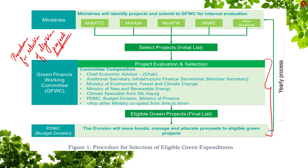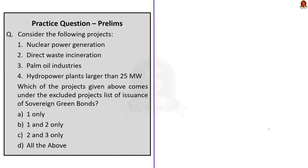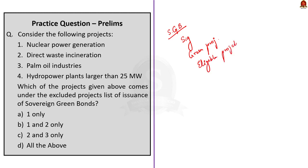In this article discussion, we saw about sovereign green bonds and their significance, the principles of green project classification, and the eligible categories of projects for which the proceeds from sovereign green bonds will be used. Let us move on to the next article discussion.